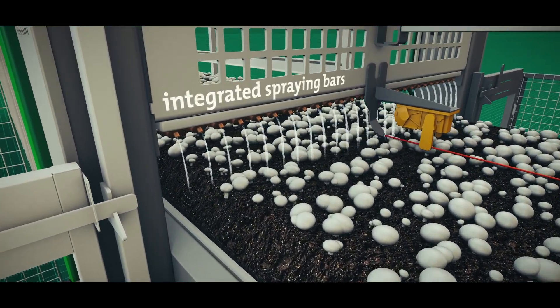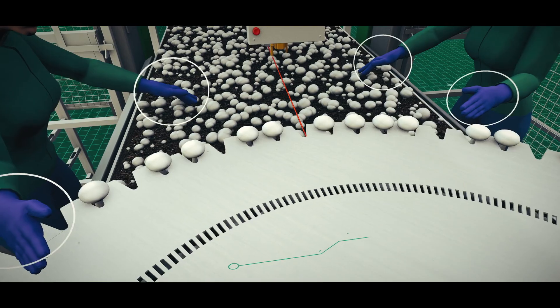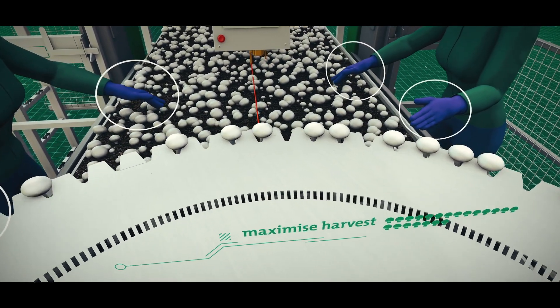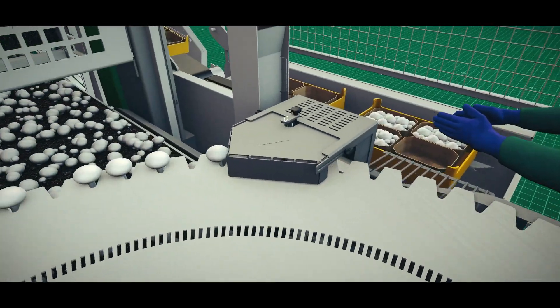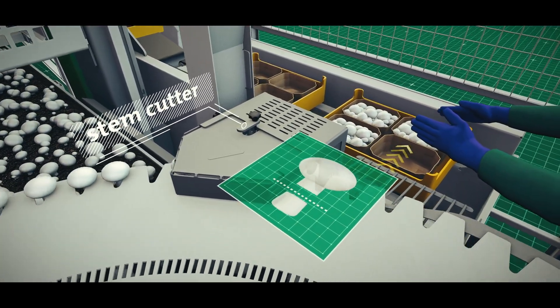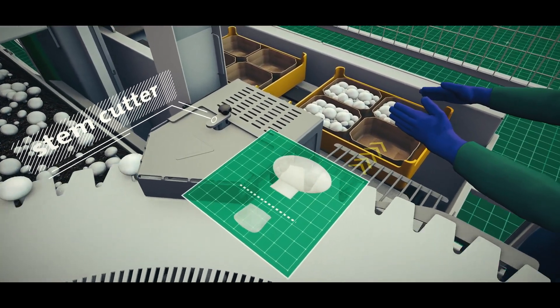As each picker picks with two hands, the harvest is maximized. In the harvesting disk, the stems of the picked mushrooms are cut to the right height. The cutting waste is automatically disposed of and recycled.